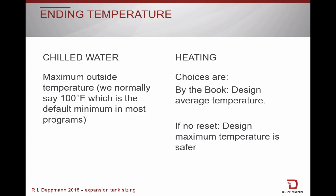There are two ending temperature choices for a heating system. Choice one, by the book: the design average temperature. Or you could go with choice two, if no reset: the design maximum temperature. It is safer.